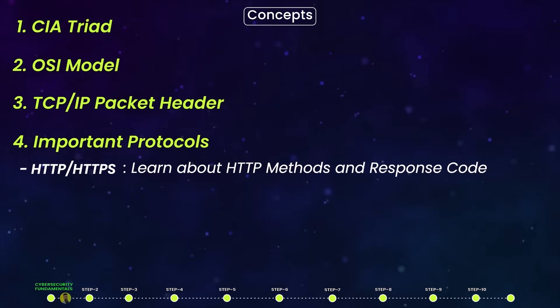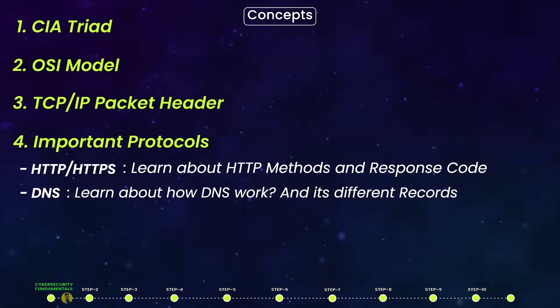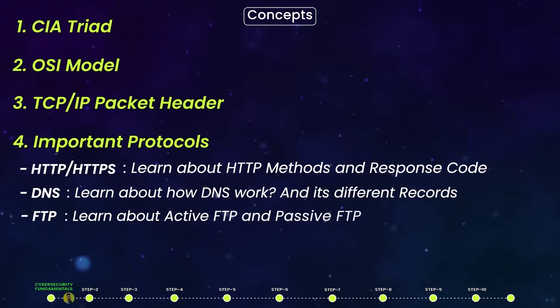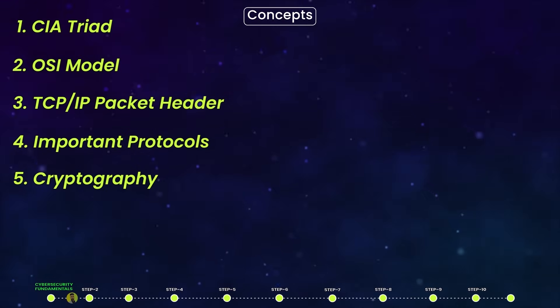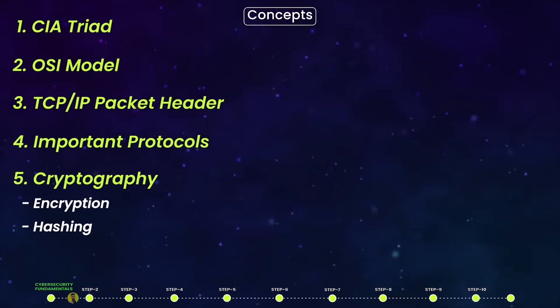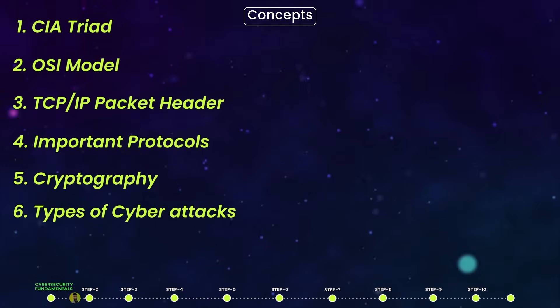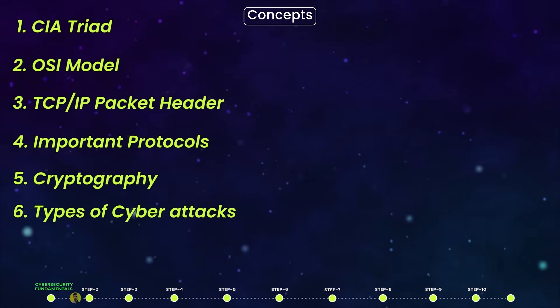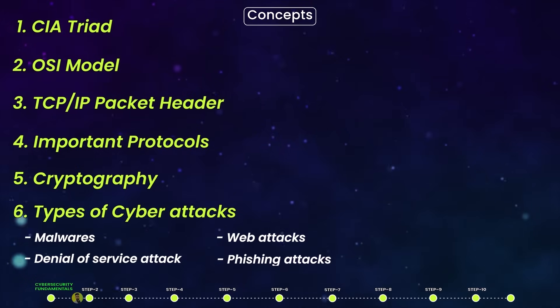You should also know about important protocols such as HTTP and HTTPS, including HTTP methods and response codes. Learn about DNS — how it works and its different record types. Learn about FTP, including active and passive FTP. You should also learn about cryptography, encryption, hashing, and public key infrastructure.